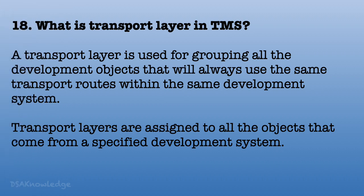What is a transport layer in Transport Management System? A transport layer is used for grouping all development objects that will always use the same transport routes within the same development system. Transport layers are assigned to all objects that come from a specified development system.